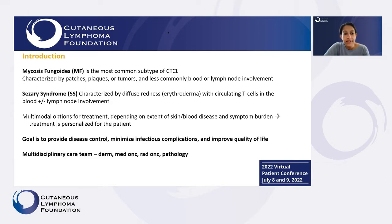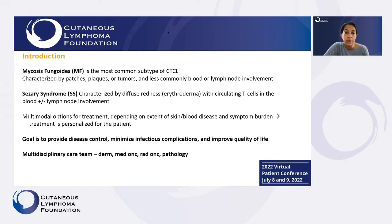Mycosis fungoides is the most common subtype of cutaneous T cell lymphoma, and it's characterized by either flat patches, thicker plaques, or raised bumps or tumors. Less commonly, it can involve areas outside of the skin, like the blood or the lymph nodes. Sézary syndrome is called the leukemic variant, which means that there are lymphoma cells circulating in the blood. This is often characterized by diffuse redness or erythroderma of the skin and can also involve the lymph nodes. There are lots of different options for treatment, and treatment really depends on where the lymphoma is affecting the patient and how the patients are feeling.